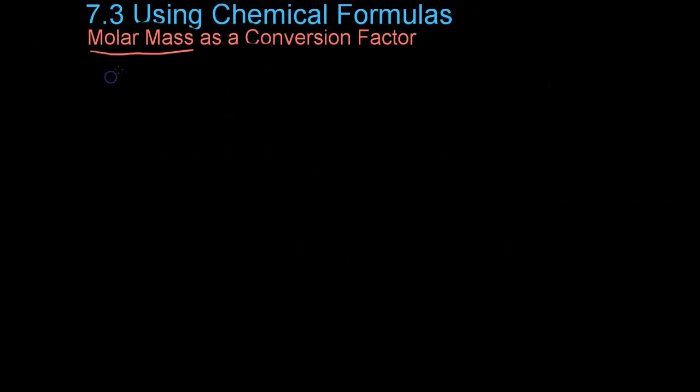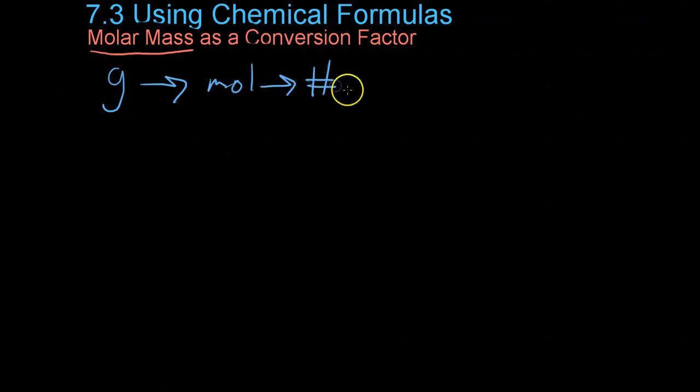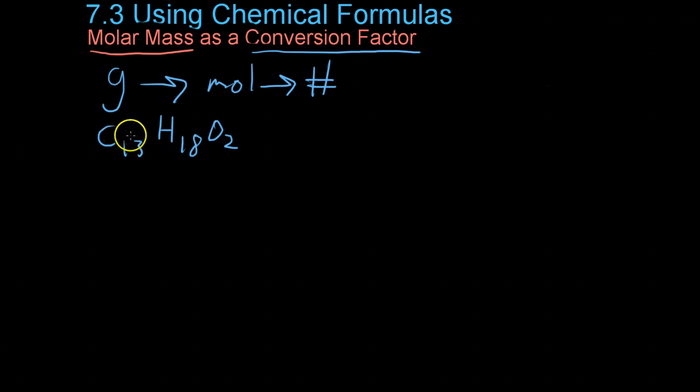Similarly, you can go backwards. If you're given a number of grams and you want to go to moles or to the number of atoms or molecules, you can do that, again, using this as a conversion factor. So let's take ibuprofen, which is C13H18O2. And this is the stuff that's in Advil and other generic pain relievers. And if you take the relative abundance of each element, that is the number of times it appears in the molecule, and multiply it by the atomic mass units, or rather, its molar mass, you get that it has a molar mass of 206.31 grams for each mole.